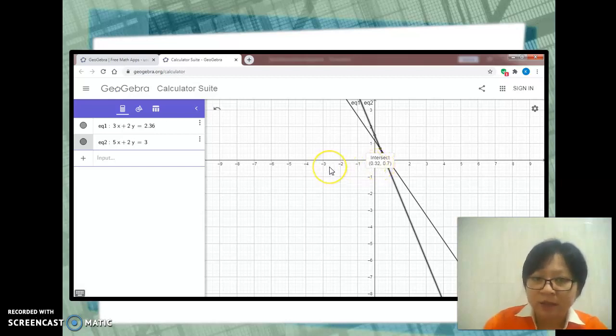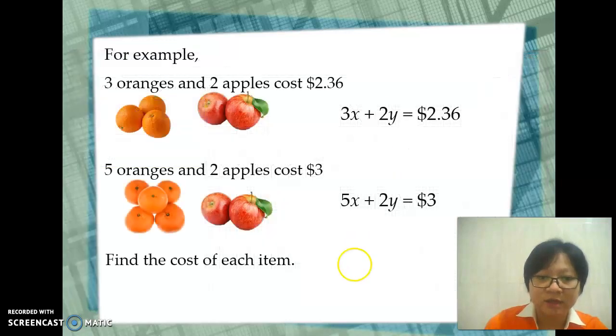Since x is the price of an orange and y is the price of an apple, the price of one orange is $0.32, and the price of one apple is $0.70. Let's put this in an answer statement.